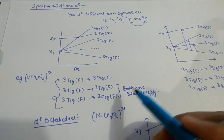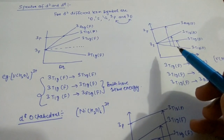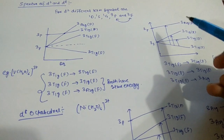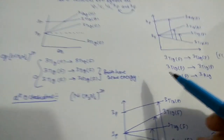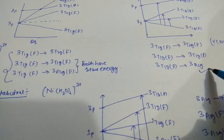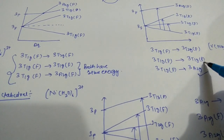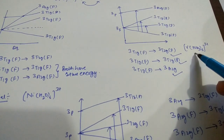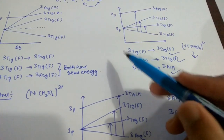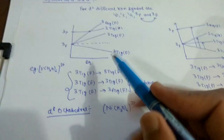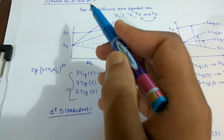For the d² system, this cross point corresponds to water. Up to water, we will observe only the first two transitions, because up to water, both ³A₂g and ³T₁g levels have the same energy, so these two transitions are effectively the same. In the case of a ligand stronger than water — with greater crystal field splitting energy — the ³A₂g level goes to higher energy. For example, if we use ammonia, we get three transitions. In the case of water, we get only two transitions.